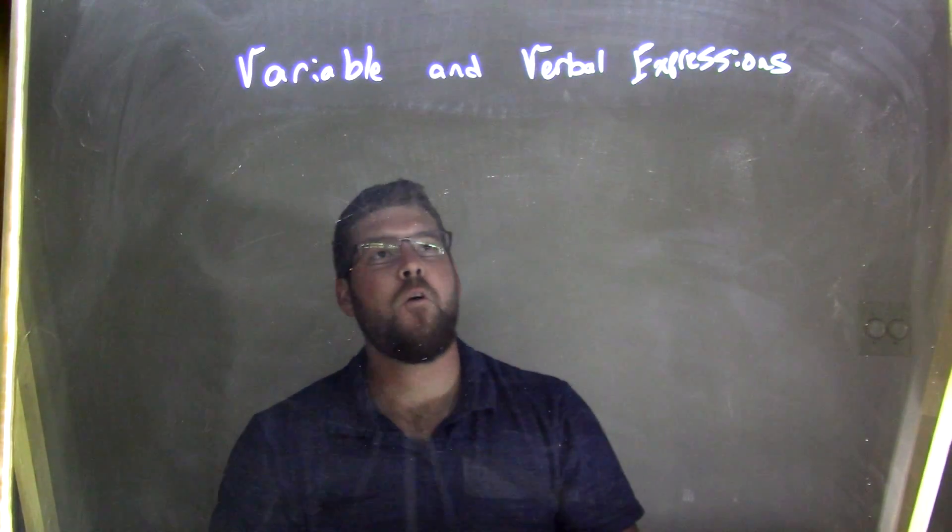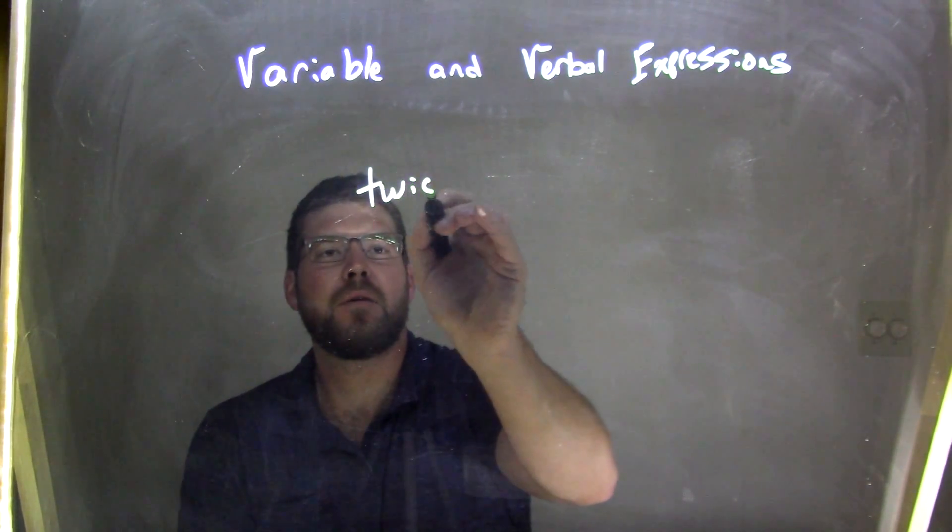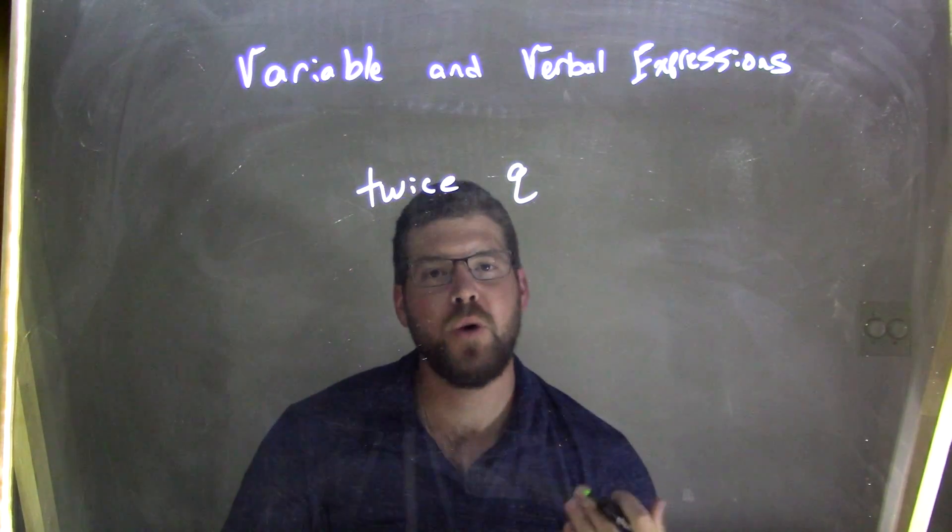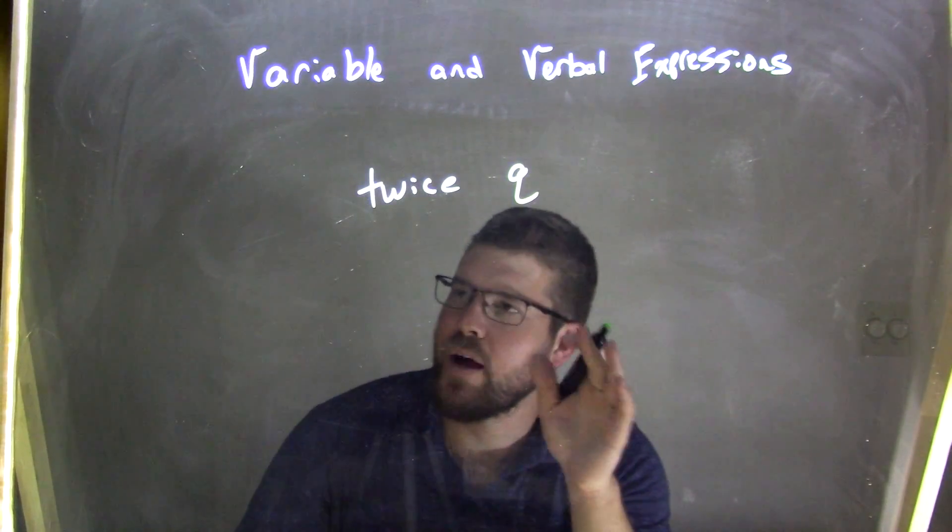So if I was given the verbal expression of twice the letter Q—twice Q—and I wanted to convert that into a variable expression, I would say, okay, twice.